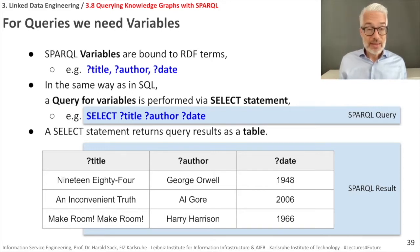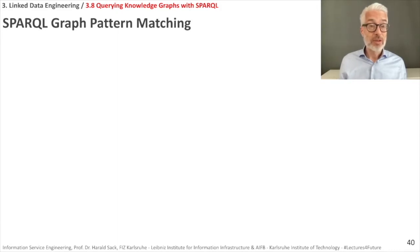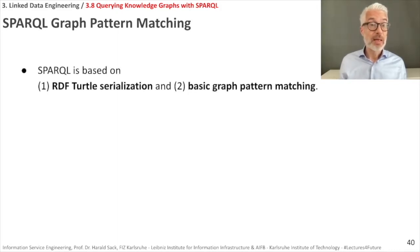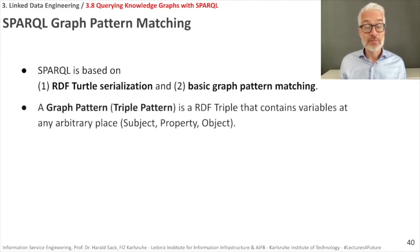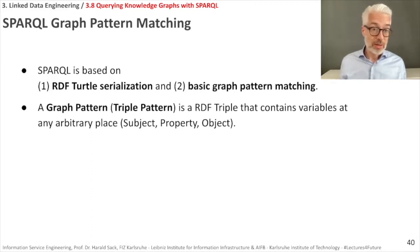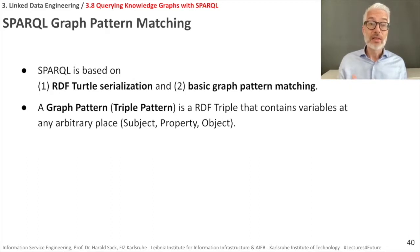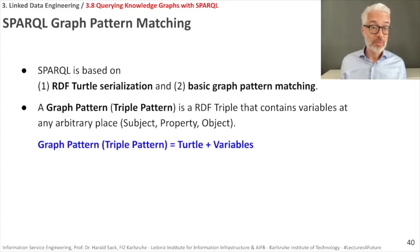How does SPARQL work? SPARQL works with graph pattern matching. It's based on RDF Turtle serialization — if you know Turtle you can read SPARQL — and you do basic graph pattern matching. What's a graph pattern or a triple pattern? This is an RDF triple that contains variables at any arbitrary place. A triple consists of subject, property, and object, and on any of these positions there can be variables. Therefore a graph pattern or triple pattern is Turtle plus variables.